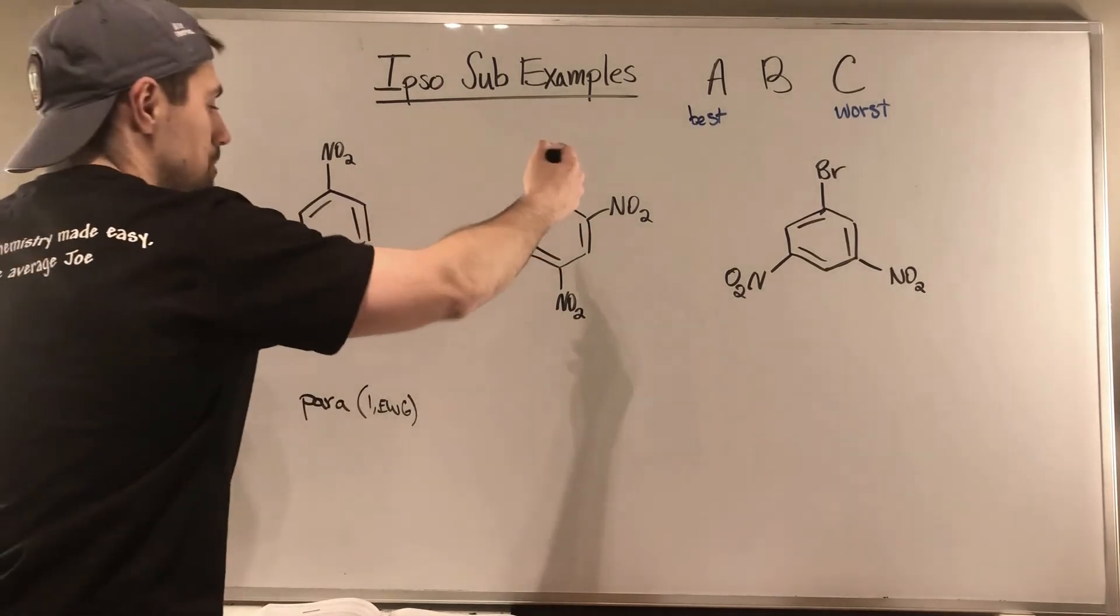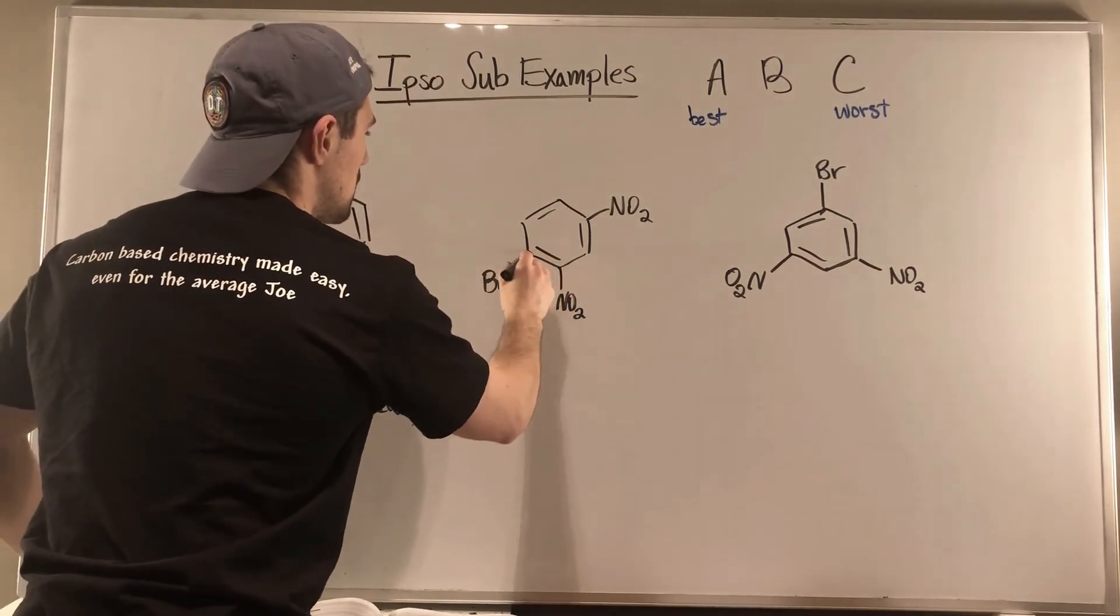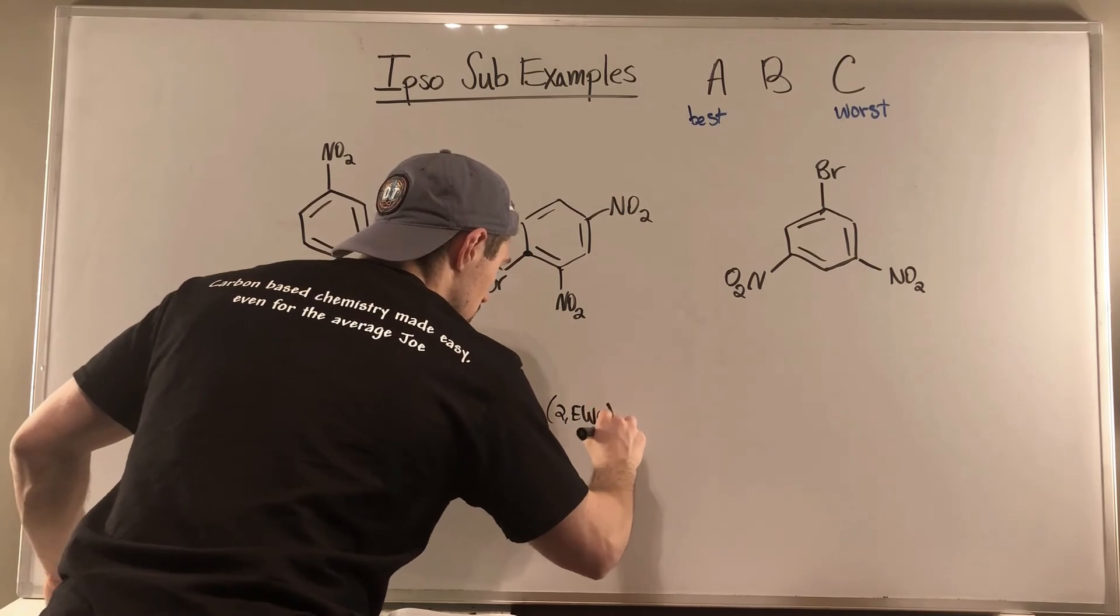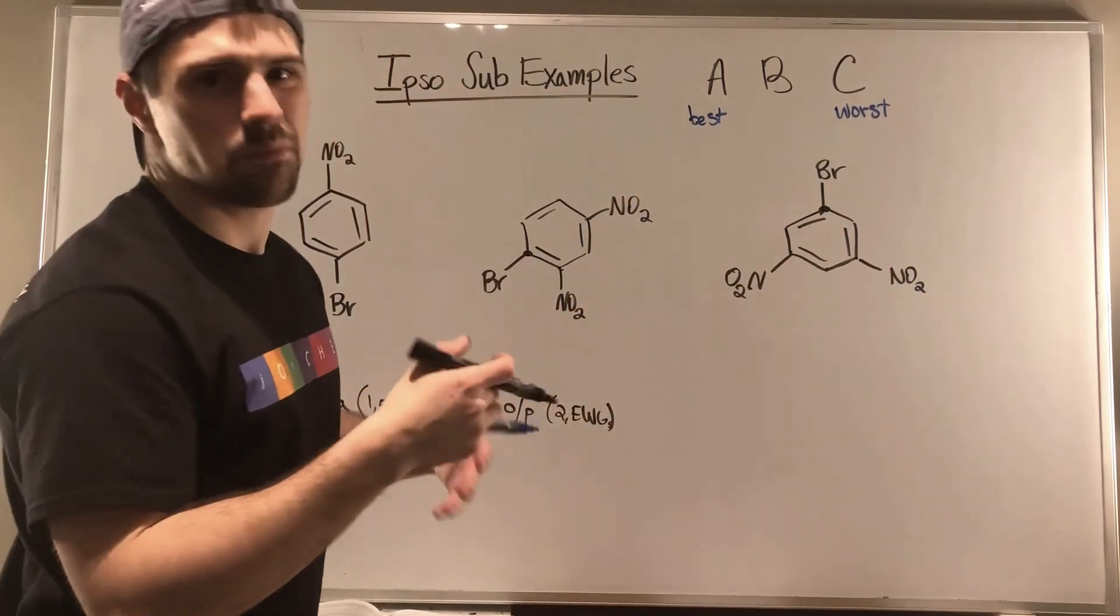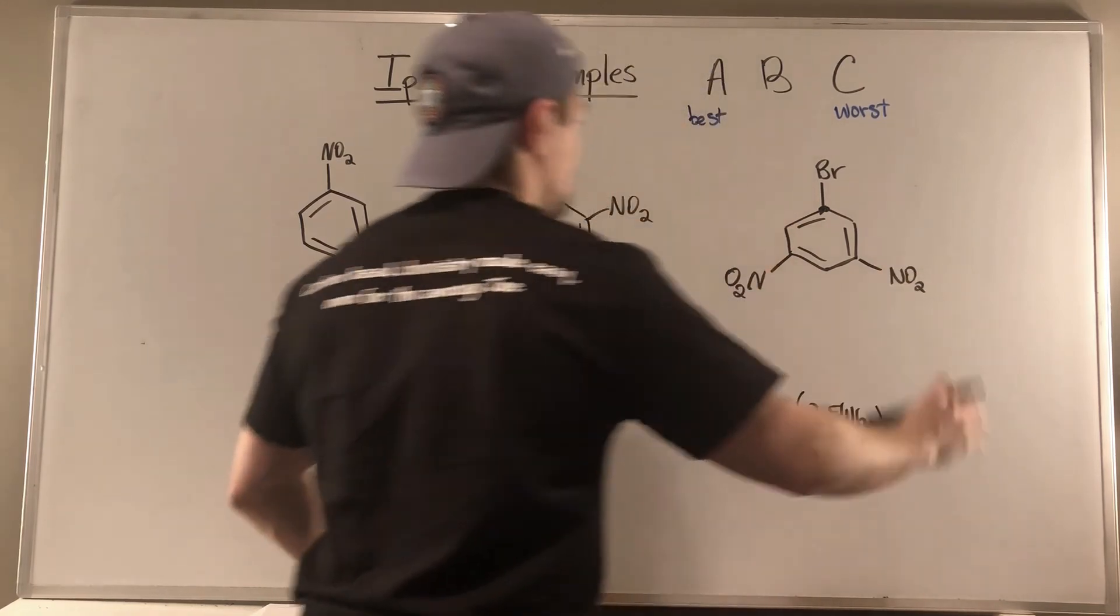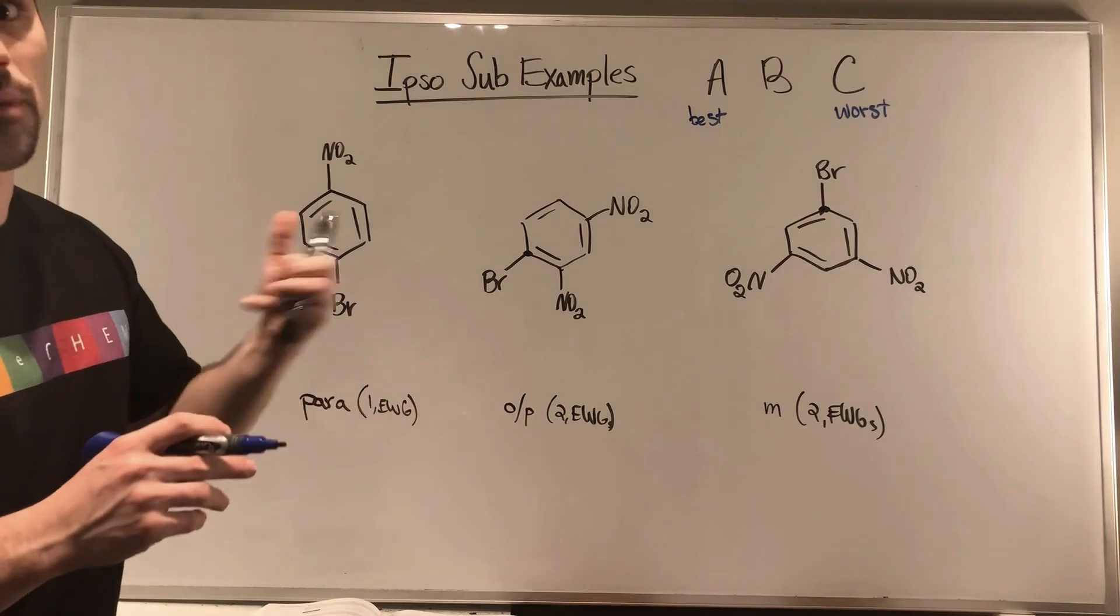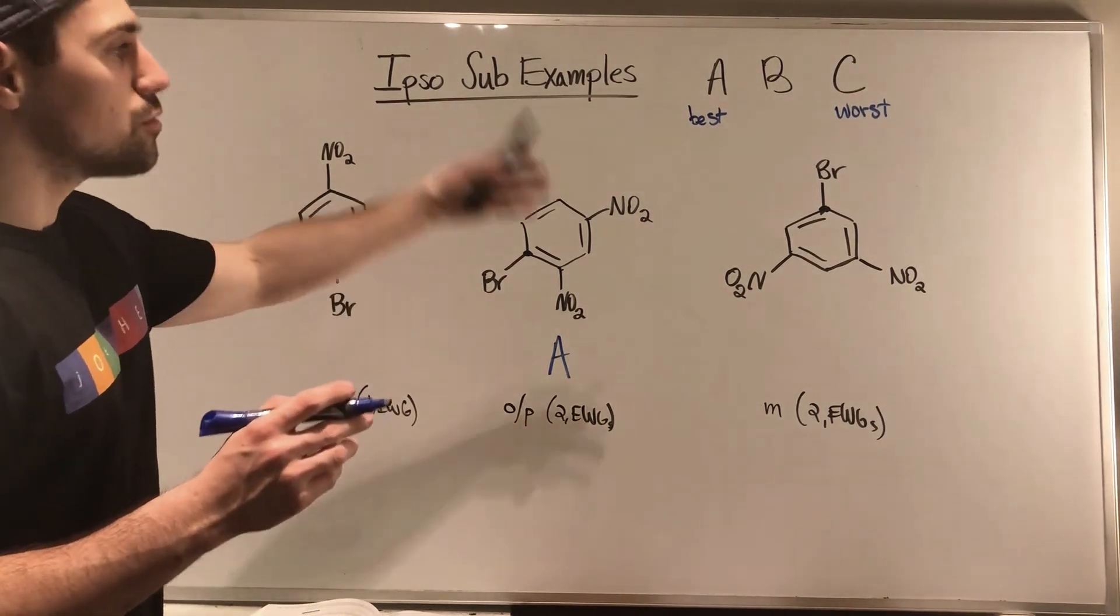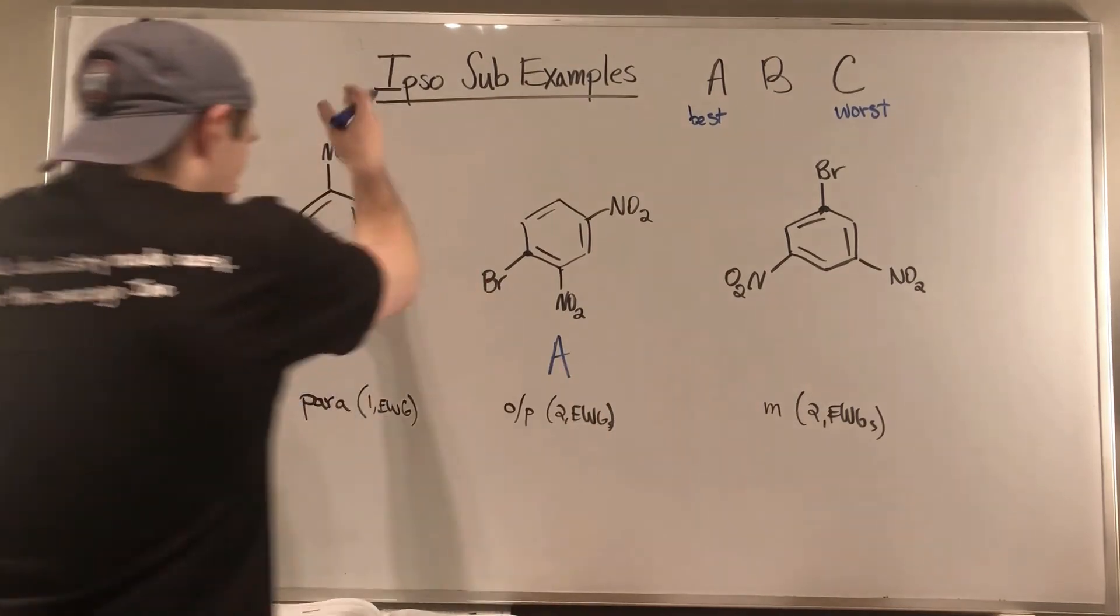Let's not get turned around by the fact stuff is not just nice and vertical on the ring. Here we have an ortho relationship and a para relationship, so we got ortho-para with two EWGs - looking pretty good. Finally, this was kind of like a gotcha, but we have meta and two electron withdrawing groups. Remember ortho-para help the ipso substitution get stabilized, make the reaction go faster, more favorable. This is our A.